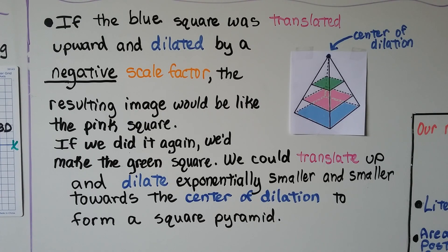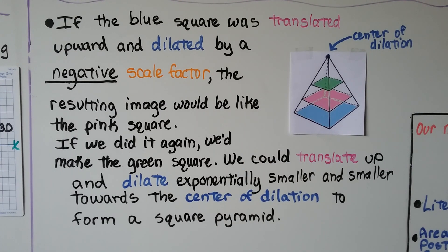Take a look at this diagram here. The blue square was translated upward and dilated by a negative scale factor, and the resulting image would be the pink square in the middle here. And if we did it again, we'd make this green square, this little one on top. We could translate up and dilate exponentially smaller and smaller towards the center of dilation to form a square pyramid.